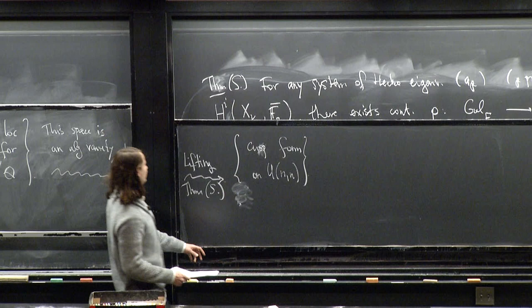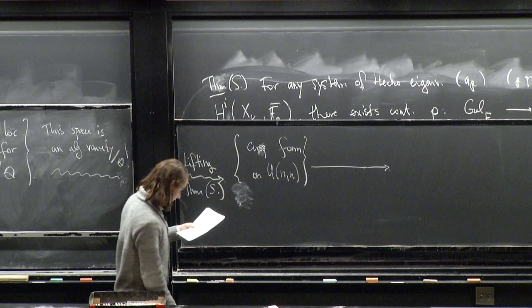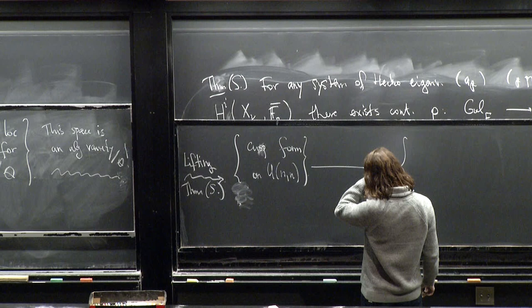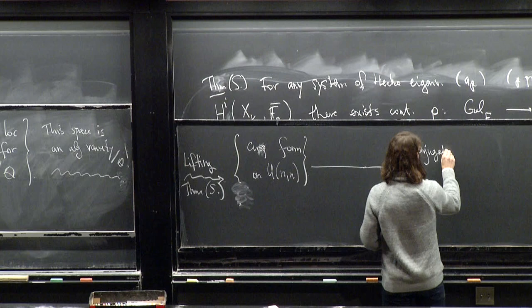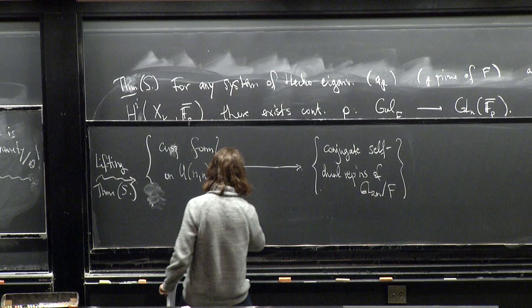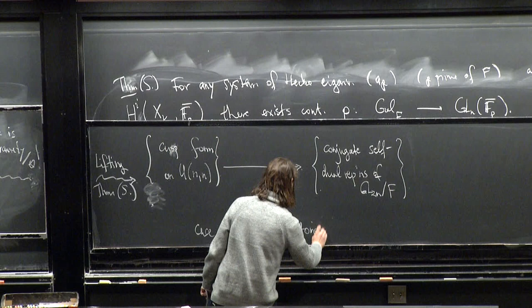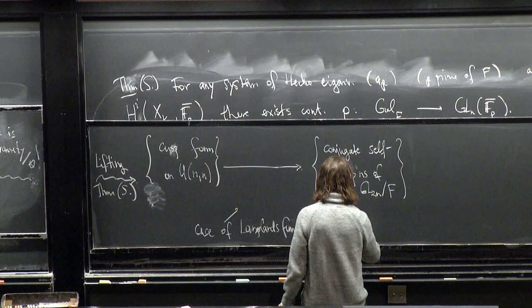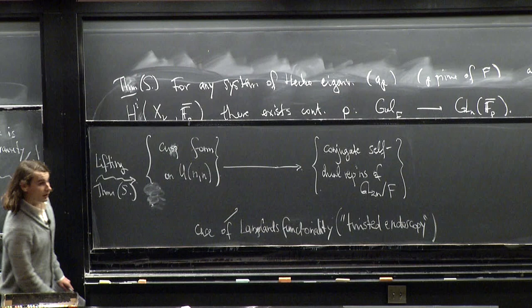This means that there is some cuspidal automorphic representation on this quasi-split unitary group. For these guys it was already known that there are Galois representations. But the fact that this was known is the major achievement in the area, using the work of many, many people. The first step is that you lift these guys to conjugate self-dual representations of GL2N over this field F again. That's the case of what's called Langlands Functoriality, which relates automorphic forms on different groups, which we're going to take because it falls under the cases which one can handle using endoscopy, in this case twisted endoscopy.